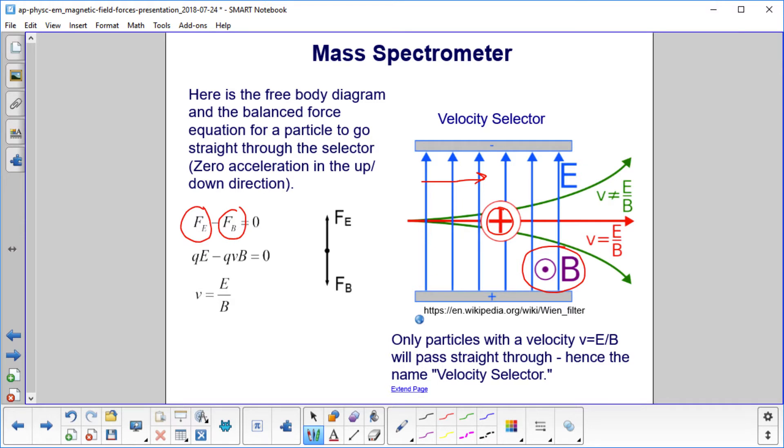We will then substitute in the values, so we have QE minus QVB equals zero. And here's our free body diagram. Notice the lengths of the forces are the same, because we just want the particle moving perfectly horizontal.